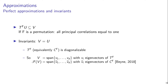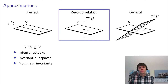then any invariant subspace must split into one-dimensional vector spaces spanned by the eigenvectors of T superscript F. And after taking a Fourier transformation, this means that invariants are a span of eigenvectors of the correlation matrix of F, which is a characterization of invariants that I introduced in a previous work at AsiaCrypt 2018.